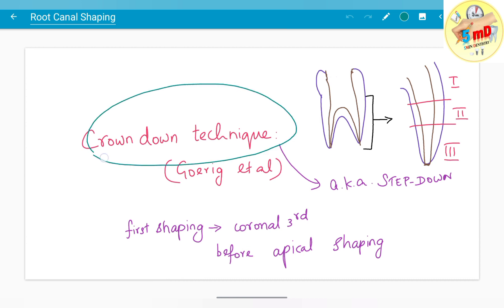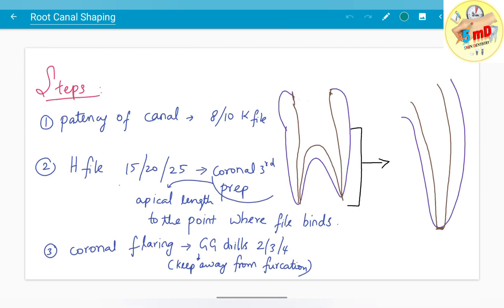The crown down technique was proposed by Goerig et al. It's also known as step down technique. As the name suggests, you prepare the coronal third first, followed by middle third, then apical third. First check canal patency using 8 or 10 K file. Then Hedstrom files size 15, 20, or 25 are used for coronal third preparation.